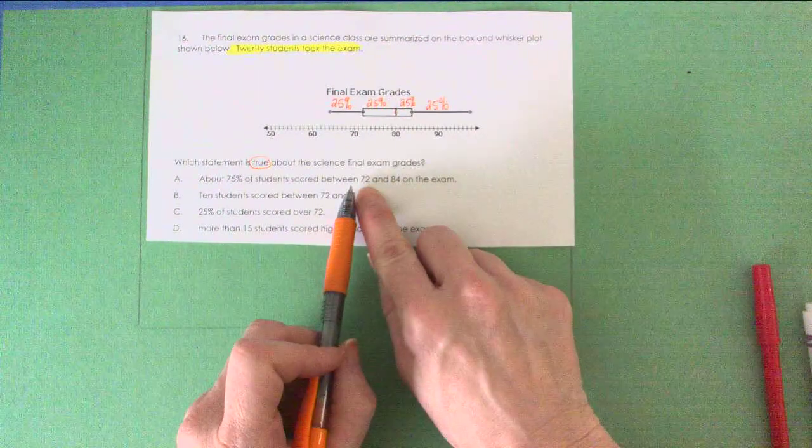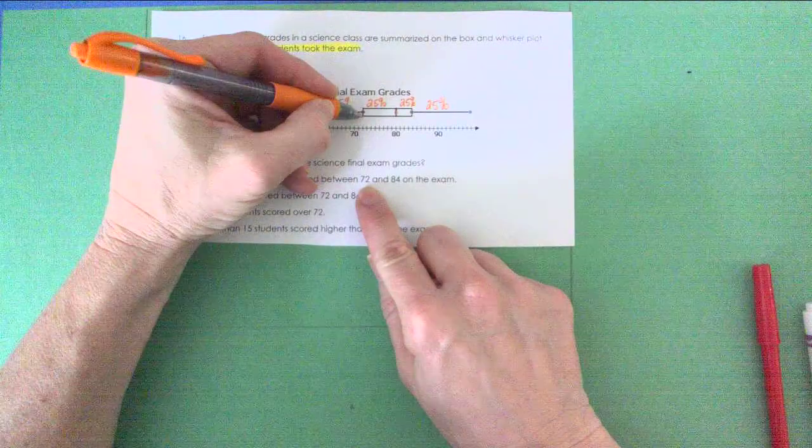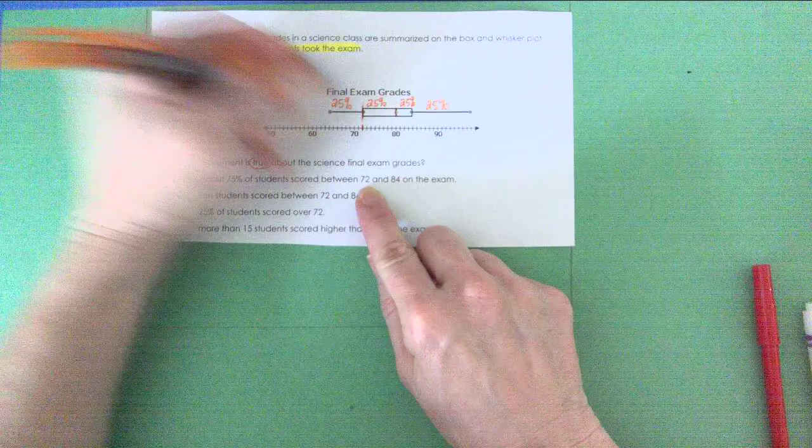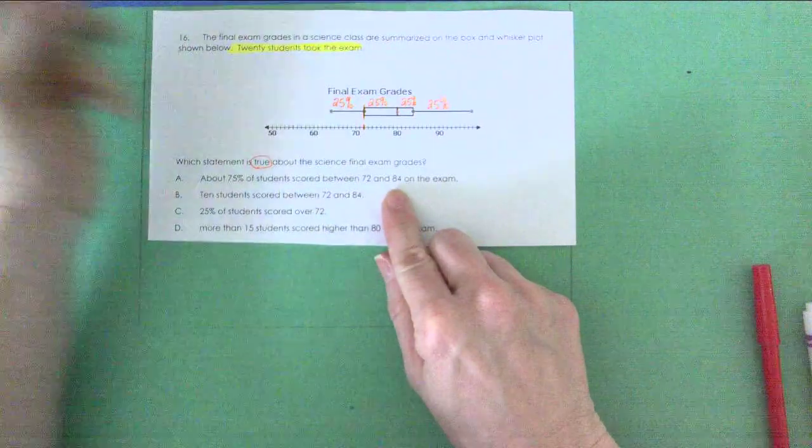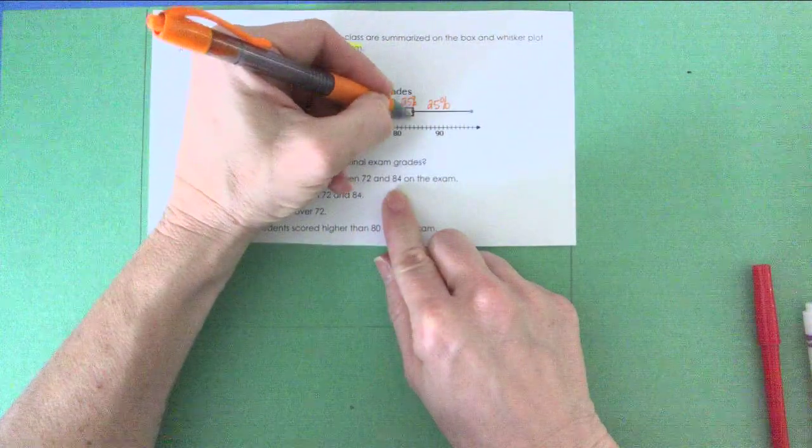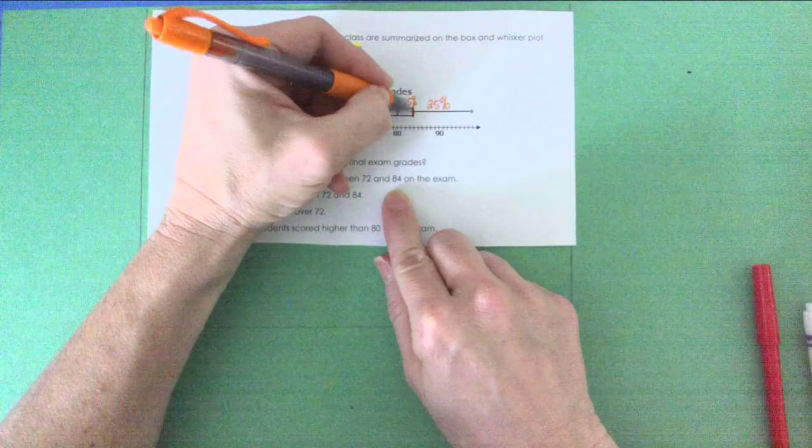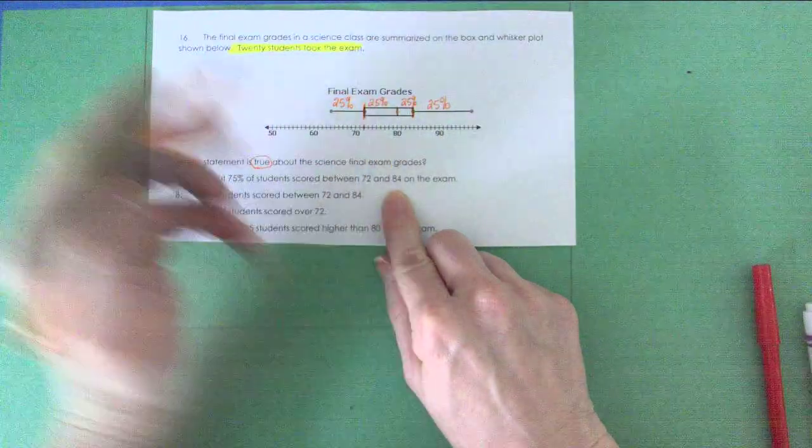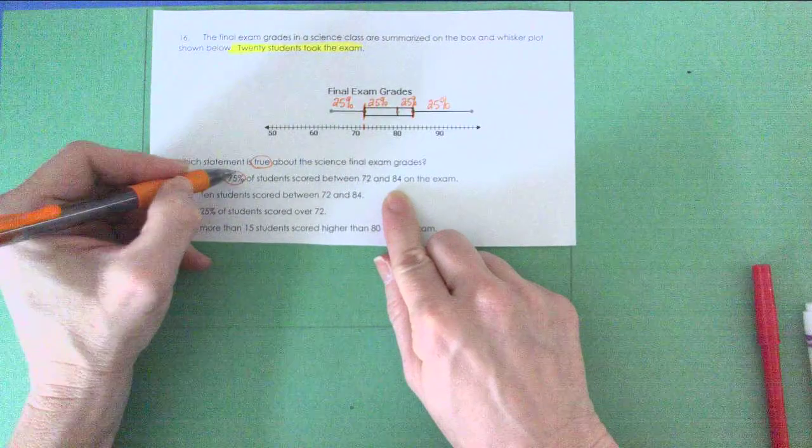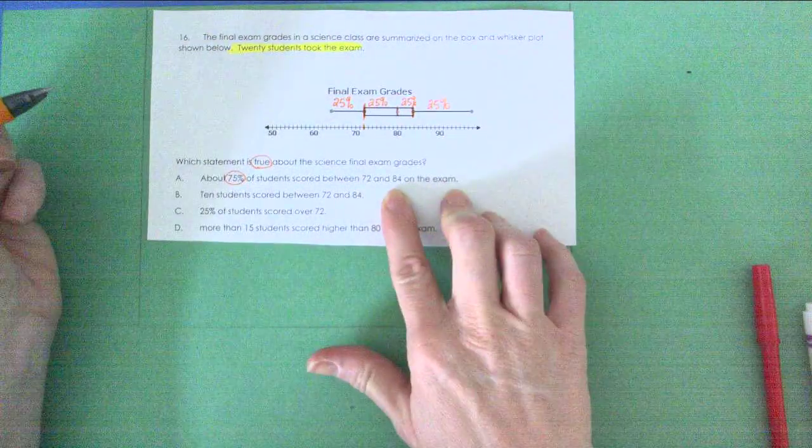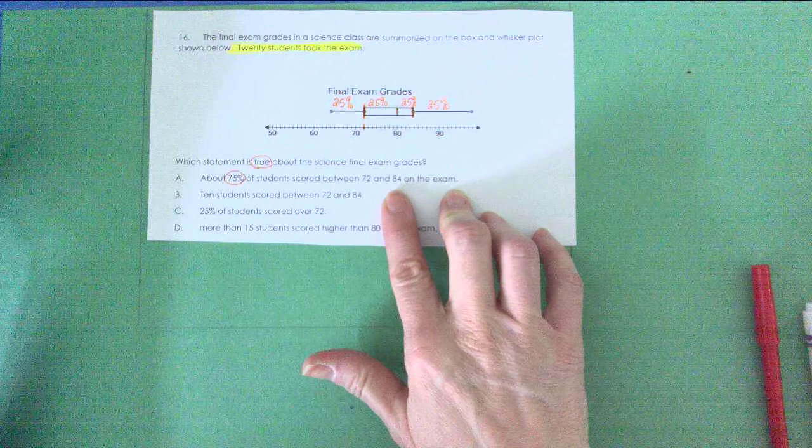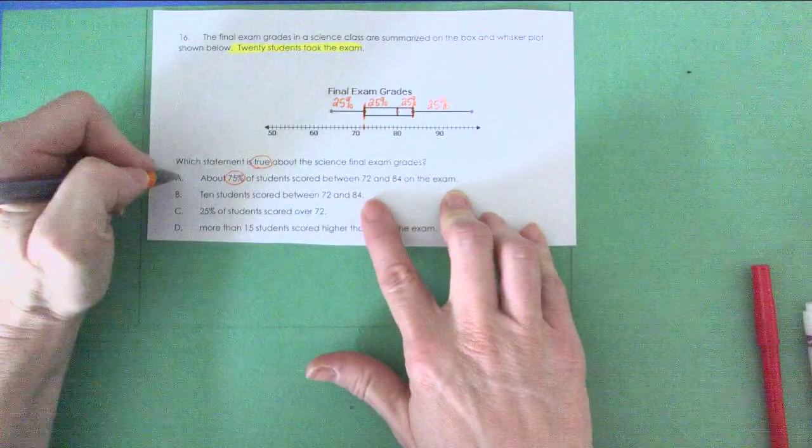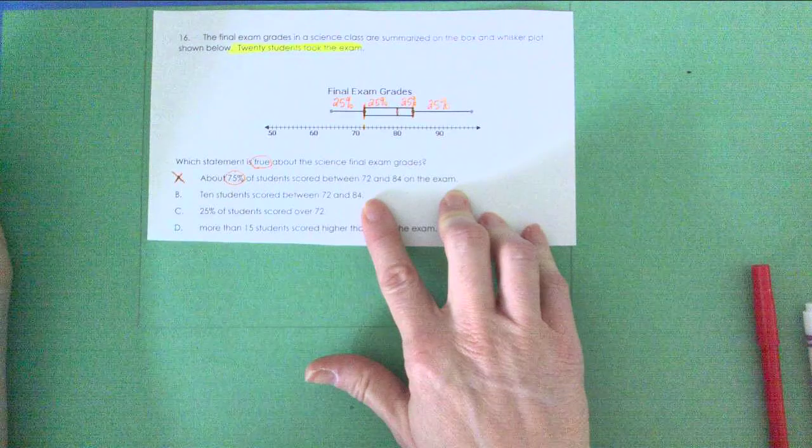Okay. So let's find 72. 72 is right here. You can see it right here, 72. And 84 is right here. Now, I would argue that that's only 50%. If this did not say 75 but rather said 50%, I would go with it. But from 72 to 84, that's only 50% of my data. I'm getting rid of letter A.